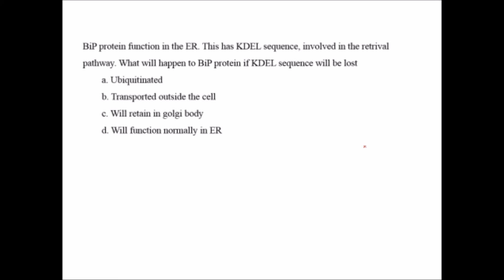The next question: BiP protein assists in proper folding of proteins inside the endoplasmic reticulum and is required in the ER. BiP protein functions in the ER and has a KDEL sequence involved in the retrieval pathway. We know that protein is first synthesized in the ER, then transported to the Golgi body, and then to its destination. Even proteins required in the ER first travel to the Golgi. The ones having the KDEL sequence get retrieved back to the endoplasmic reticulum.